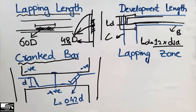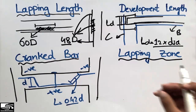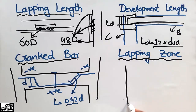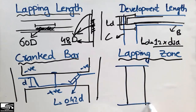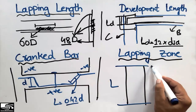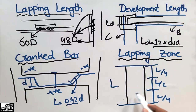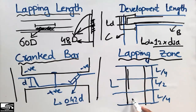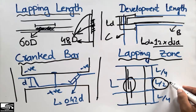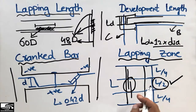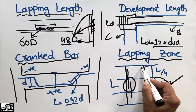The fourth topic is the lapping zone. The lapping zone is the permitted zone in which we can provide overlapping of steel bars. In the case of a column of total length L, we are restricted to providing laps only within the middle L/2 region. We are not allowed to place laps in the top L/4 or bottom L/4 regions, because stresses in the middle portion are significantly less compared to the ends.